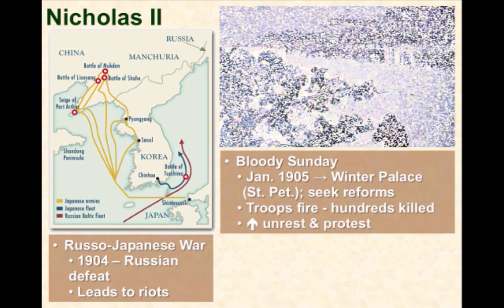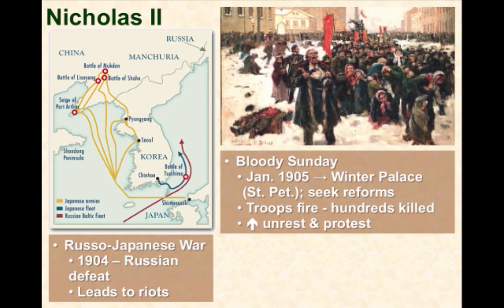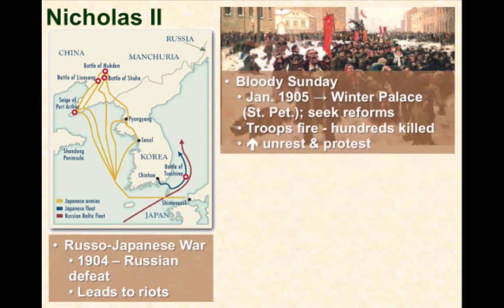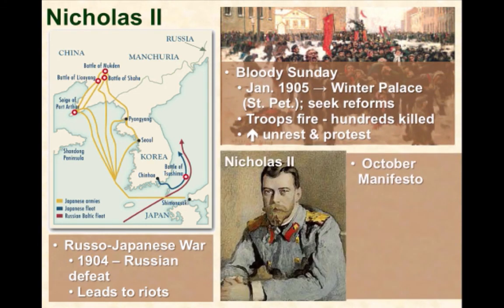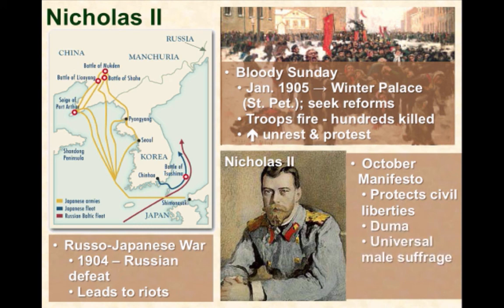The ensuing Revolution of 1905 forced Nicholas II to make changes or face annihilation. He reluctantly signed the October Manifesto, guaranteeing the protection of civil liberties. It also formally recognized the Duma, an elected legislative assembly, and provided for universal manhood suffrage. While these reforms halted the revolution, they were only somewhat followed by the Tsar, and only a few minor changes remained. Autocracy and oppression persisted throughout and even after World War I.